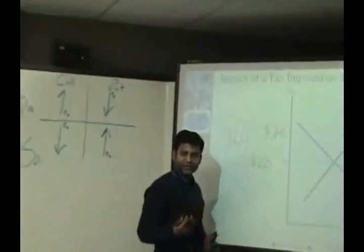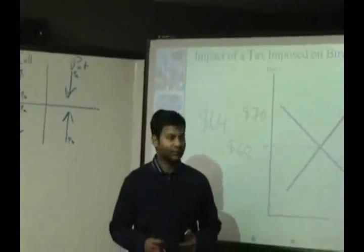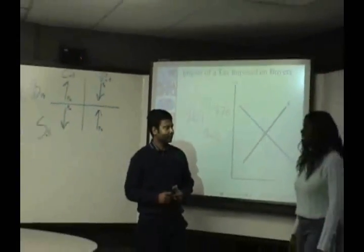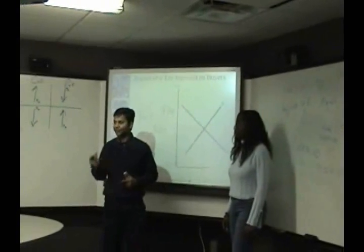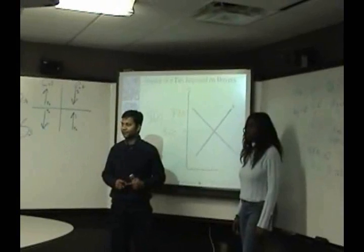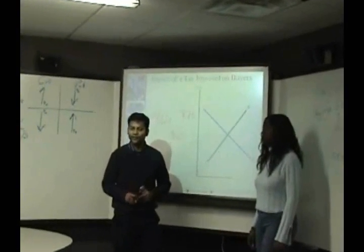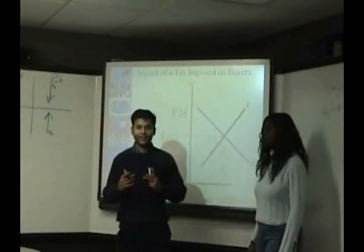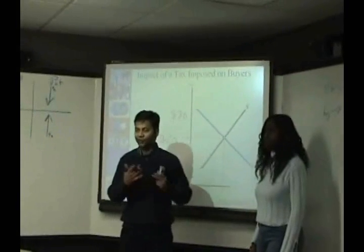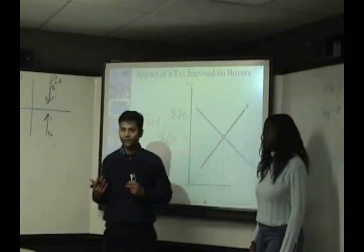Now, what is your consumer surplus now? Six dollars. Okay. What happened to the rest? What happened to the four dollars? The government got it? Absolutely. The four dollars lost in your consumer surplus was the government's gain in the form of sales tax revenues.